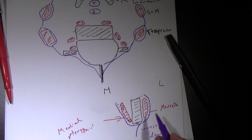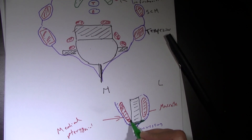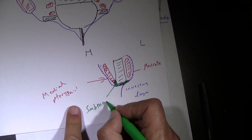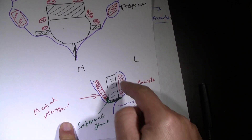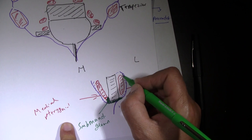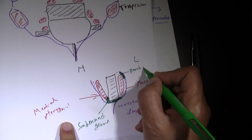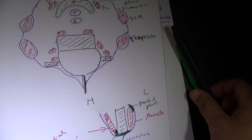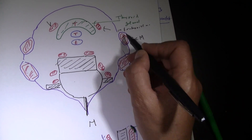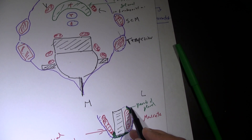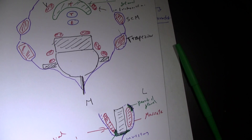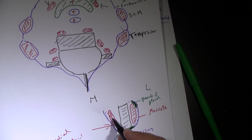Before reaching the mandible, the investing layer also encloses glands. On the medial side it invests the submandibular gland, and extending upward on the lateral side it encloses the parotid gland. So in summary, the investing layer in the neck invests the sternocleidomastoid and trapezius muscles, and in the head it invests two glands: the submandibular and parotid glands, as well as covering the masseter and the undersurface of the medial pterygoid.